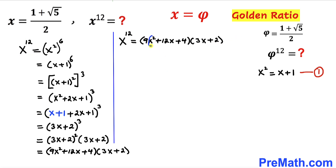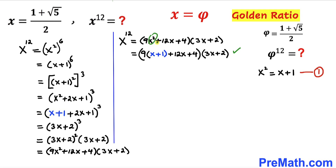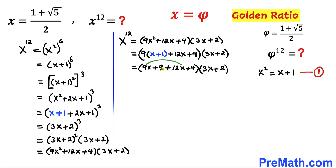Focusing on x² once again and replacing it with x plus 1 from Equation 1, then distributing the 9, we get 9x plus 9, plus 12x plus 4, all times 3x plus 2. Combining like terms gives us (21x plus 13) times (3x plus 2).